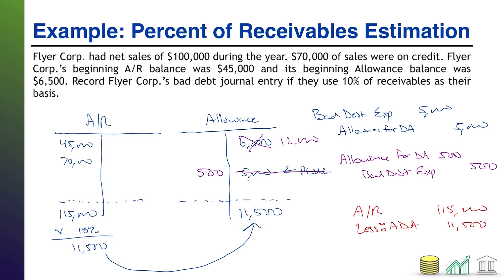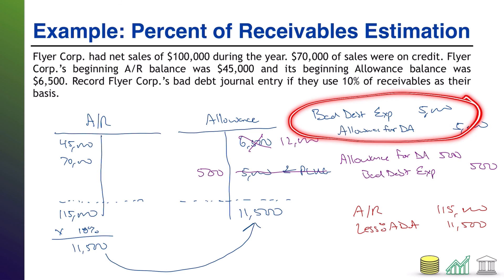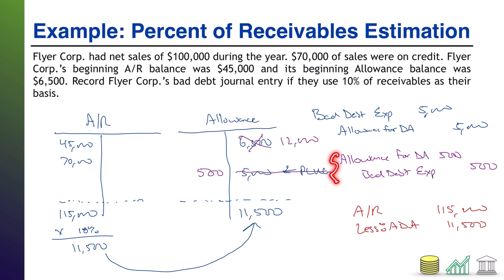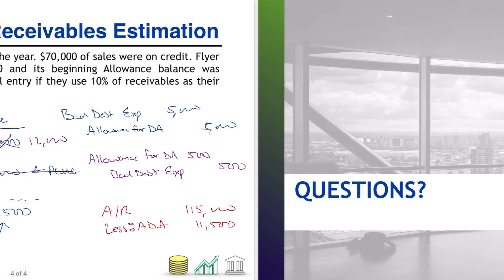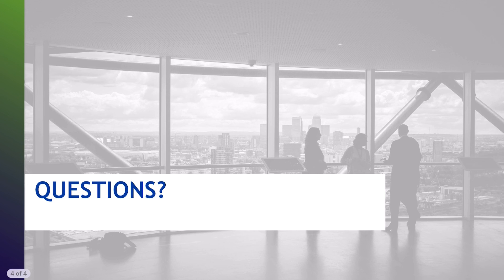Just to point that out: typically bad debt expense has the standard format, but if you've previously over-estimated your allowance, the journal entry can flip in order to reduce the allowance down to where it needs to be. That's it for estimating bad debts using the percent of receivables method. I hope you found this helpful and I hope you join me for another video.